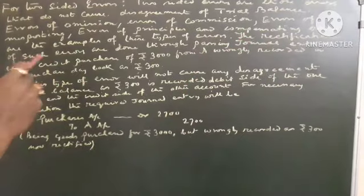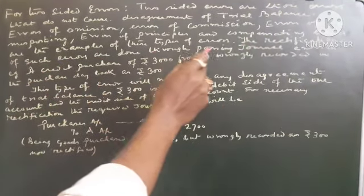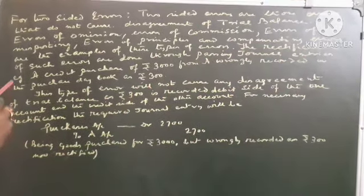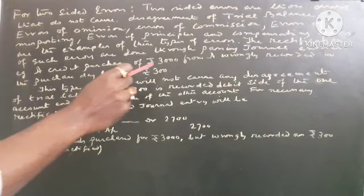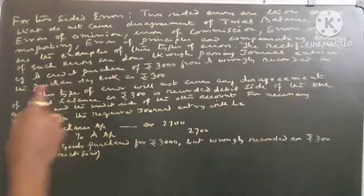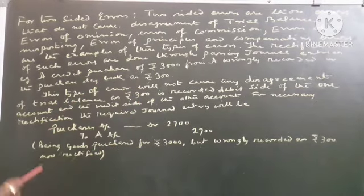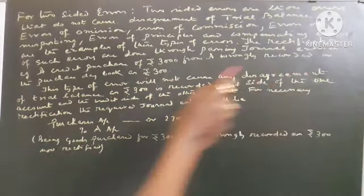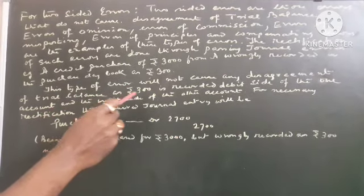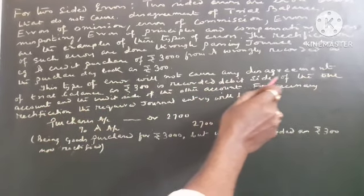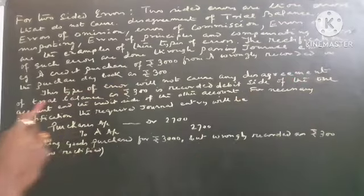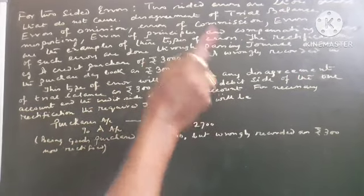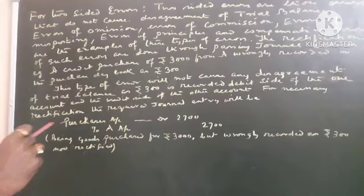The rectification of such errors are done through passing journal entries. Example, A credit purchase of Rs. 3000 from A wrongly recorded in the purchase book as Rs. 300. This type of error will not cause any disagreement of trial balance as Rs. 300 is recorded debit side of the one account and the credit side of the other account.